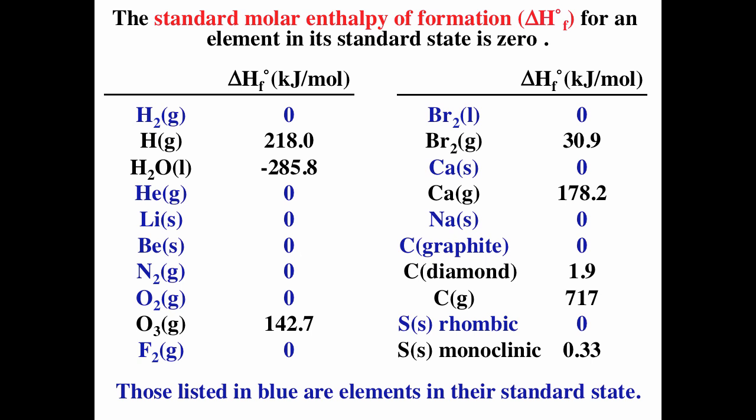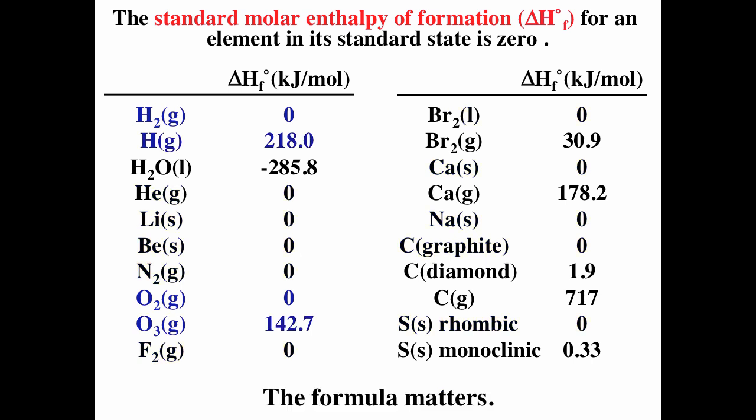Hydrogen gas H2 is the element in standard state; atomic hydrogen H is not. Helium gas is the element in standard state. Lithium is found as a solid metal. Nitrogen gas N2 is the element in standard state. The formula matters: H2 is the most stable form of hydrogen, but atomic H is not. O2 is the most stable form of oxygen under standard conditions; O3 is not, so O2 is the element in standard state.